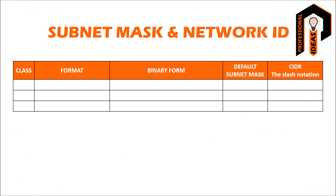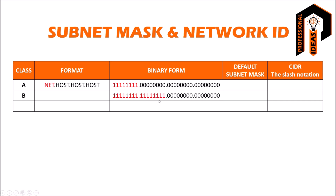As we discussed in the previous lecture, in a Class A network, the first 8 bits or first octet is designated to the network segment and the remaining 24 bits or 3 octets are designated to the host segment — format: network.host.host.host. In Class B, the first 16 bits or 2 octets are for the network segment and the remaining 16 bits or 2 octets are for the host segment — format: network.network.host.host. In Class C, the first 24 bits or 3 octets are for the network segment and the remaining 8 bits or the 4th octet are for the host segment — format: network.network.network.host.